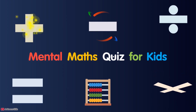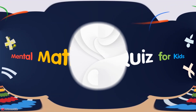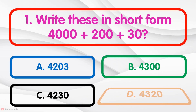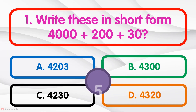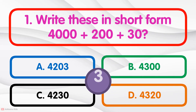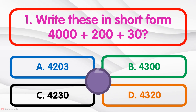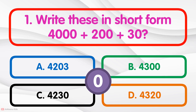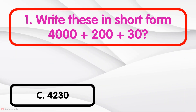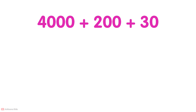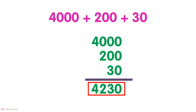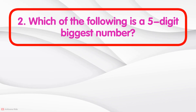Mental math quiz for kids. Write this in short form. 4230 — to write in short form, simply add these numbers. 4230. The answer is 4230.